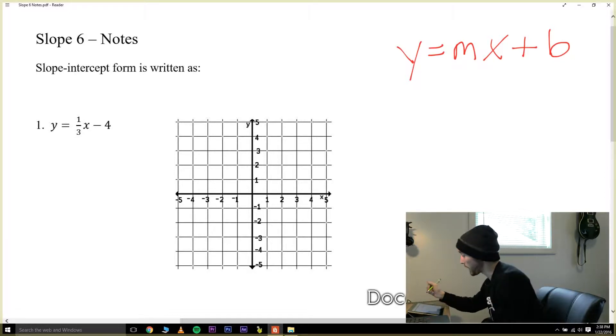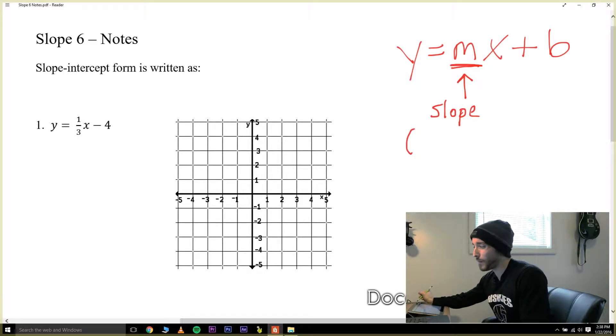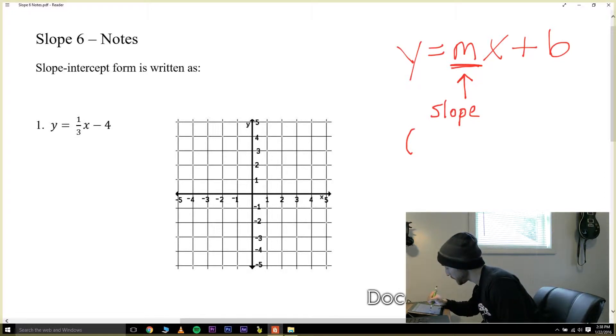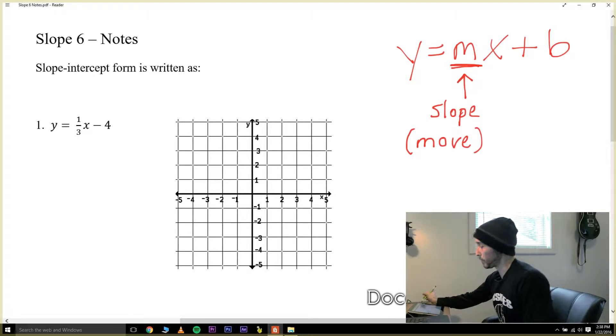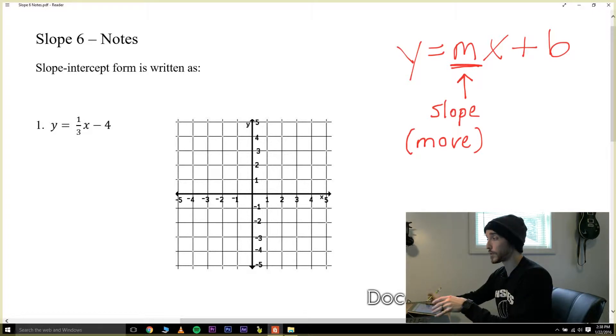First of all, let's underline the letter m. A number is going to go in this position and the number that goes in this position is the slope of the line. Now in parentheses below the word slope, you notice that they use the letter m for slope. Let's write the word move in parentheses because as we go to graph this line we're going to need to know how it moves. We can think of the slope as whatever number is in that position.